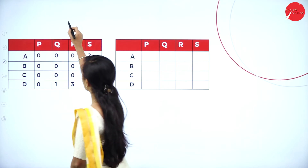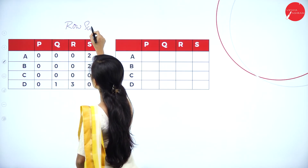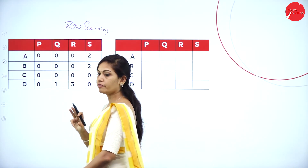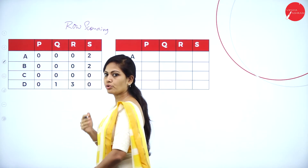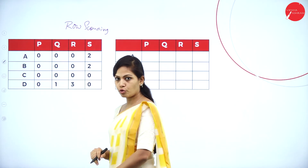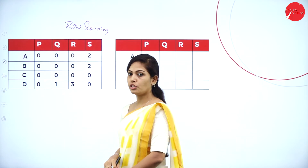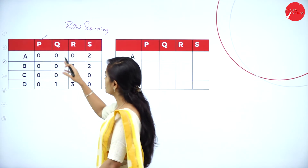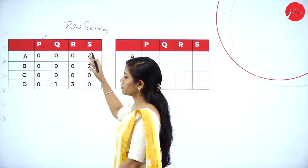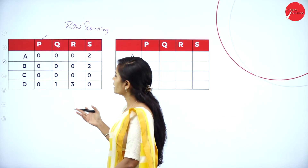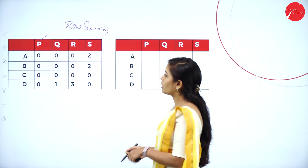The next step is row scanning. In the first row there are 3 zeros — can't assign, skip. Second row also has 3 zeros — skip. Third row has 4 zeros — skip. Fourth row has 2 zeros — can't assign. In column scanning: first column has 4 zeros — skip. Second and third columns each have 3 zeros. Fourth column has 2 zeros. No zeros can be assigned by row or column scanning.